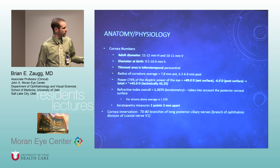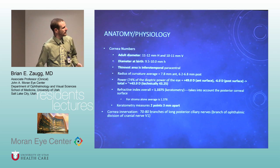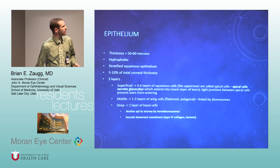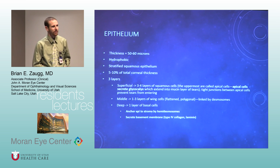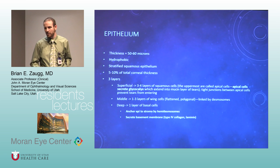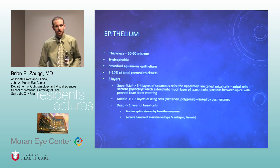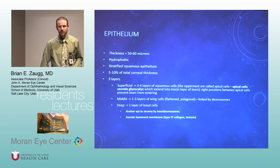They like to ask this detail: keratometry usually measures two points three millimeters apart. The thickness of the epithelium is about 50 to 60 microns. It's hydrophobic — the lipid cell membranes are rejecting fluid trying to get into the cornea. So the hydrophobic epithelium inhibits some transmission of medications across the epithelial barrier.